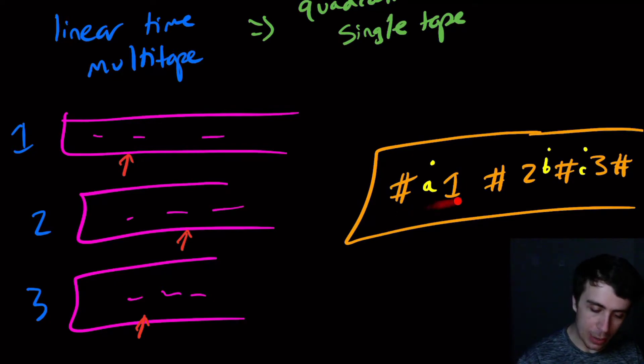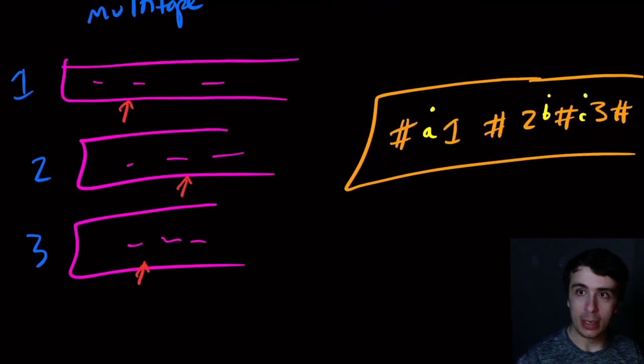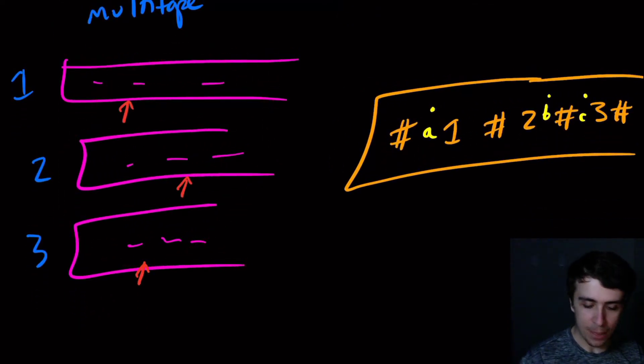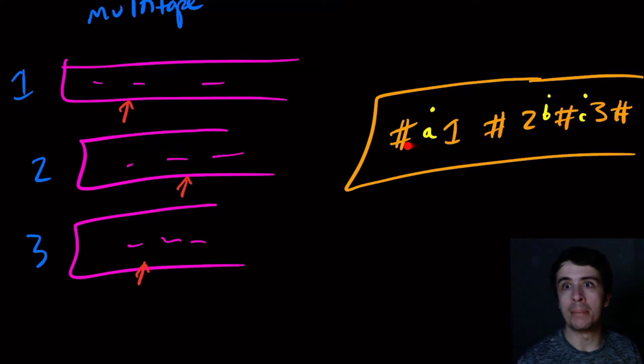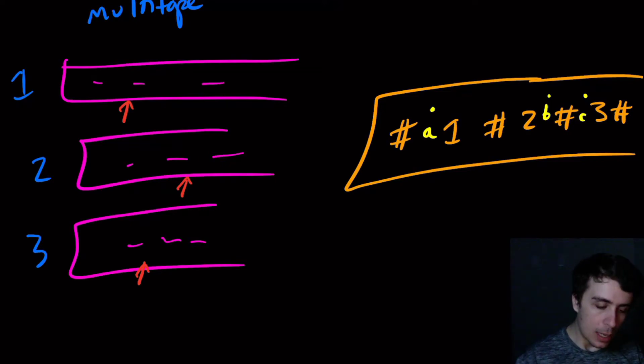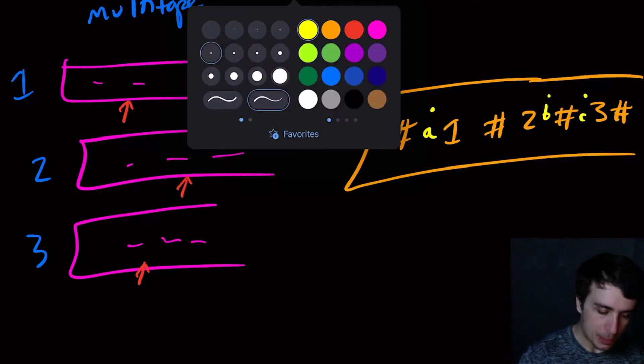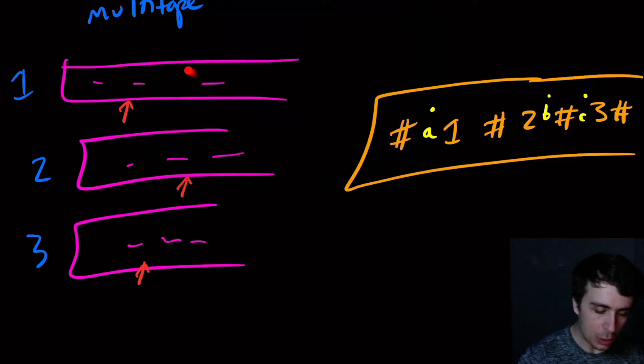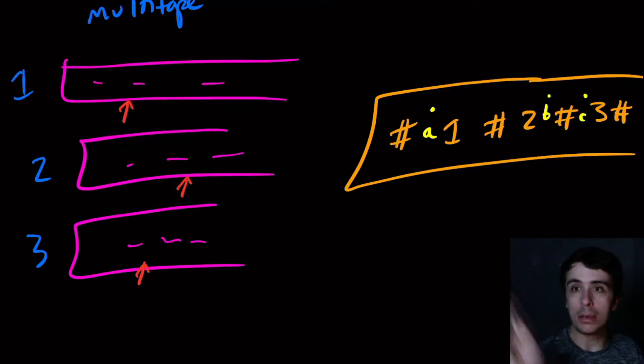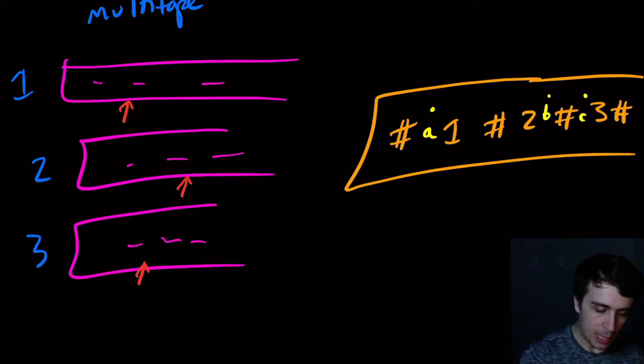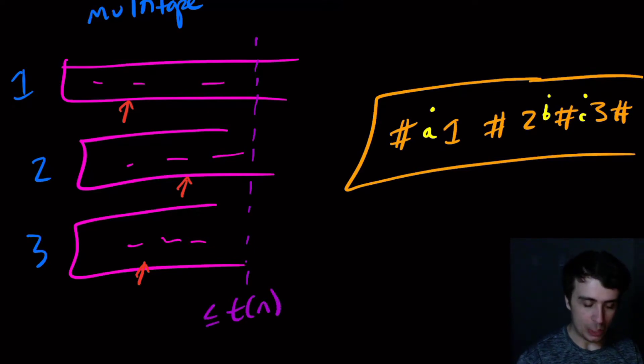So to carry out one transition in this guy, I would have to do effectively a constant number of scans across this tape. And the thing to note is, even if every single one of these transitions over here moved right every single time, the maximum possible place we could ever visit is at most T of n, is going to be at most this.